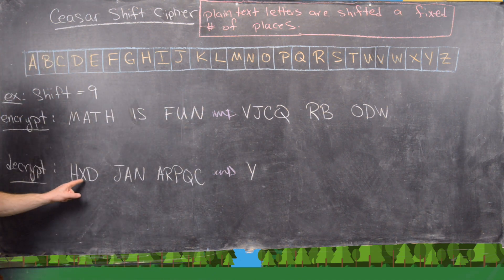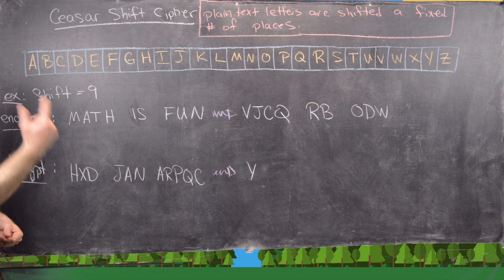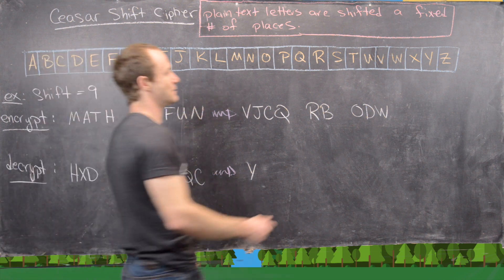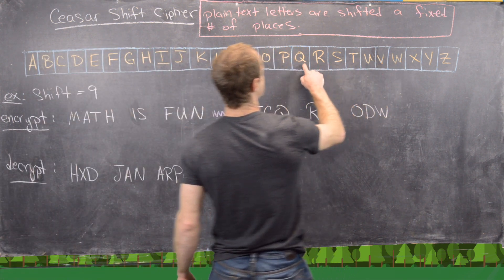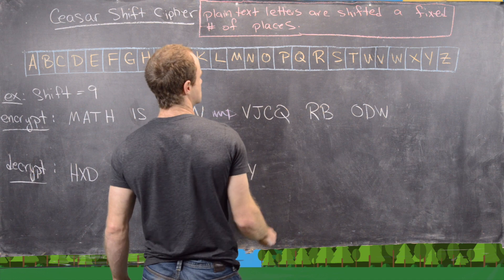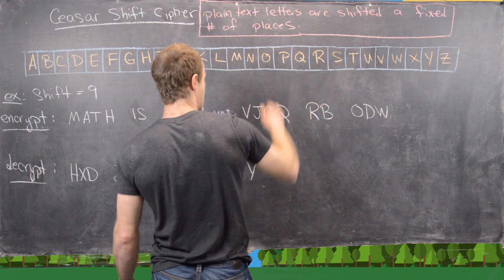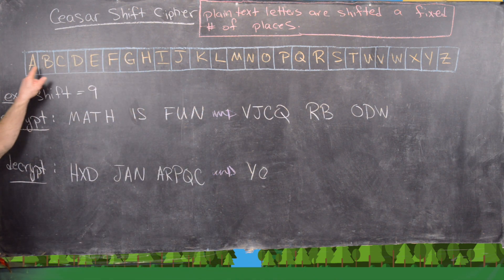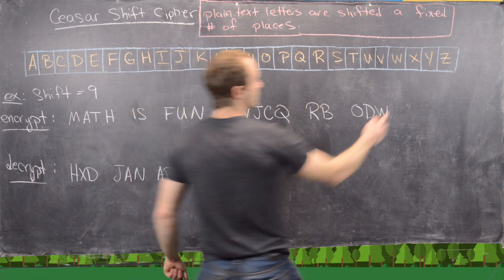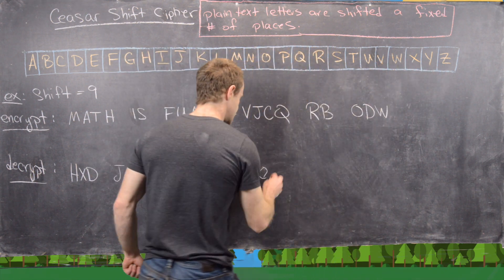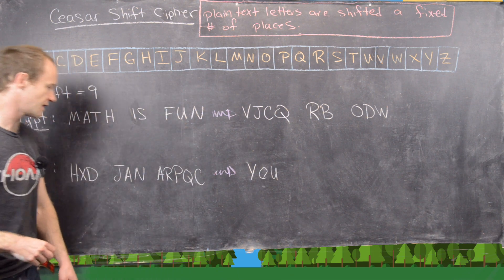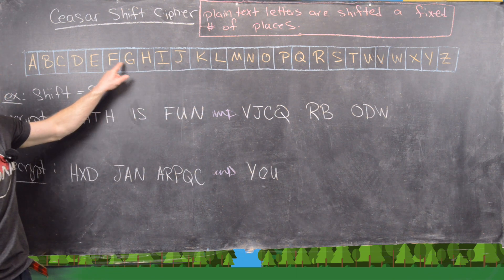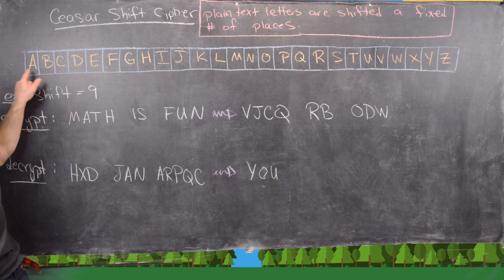Let's do a couple more and then skip to the answer. X shifted back 9 gives O as the second letter. D shifted back 9 — looping around — gives U. J shifted back 9 gives A.